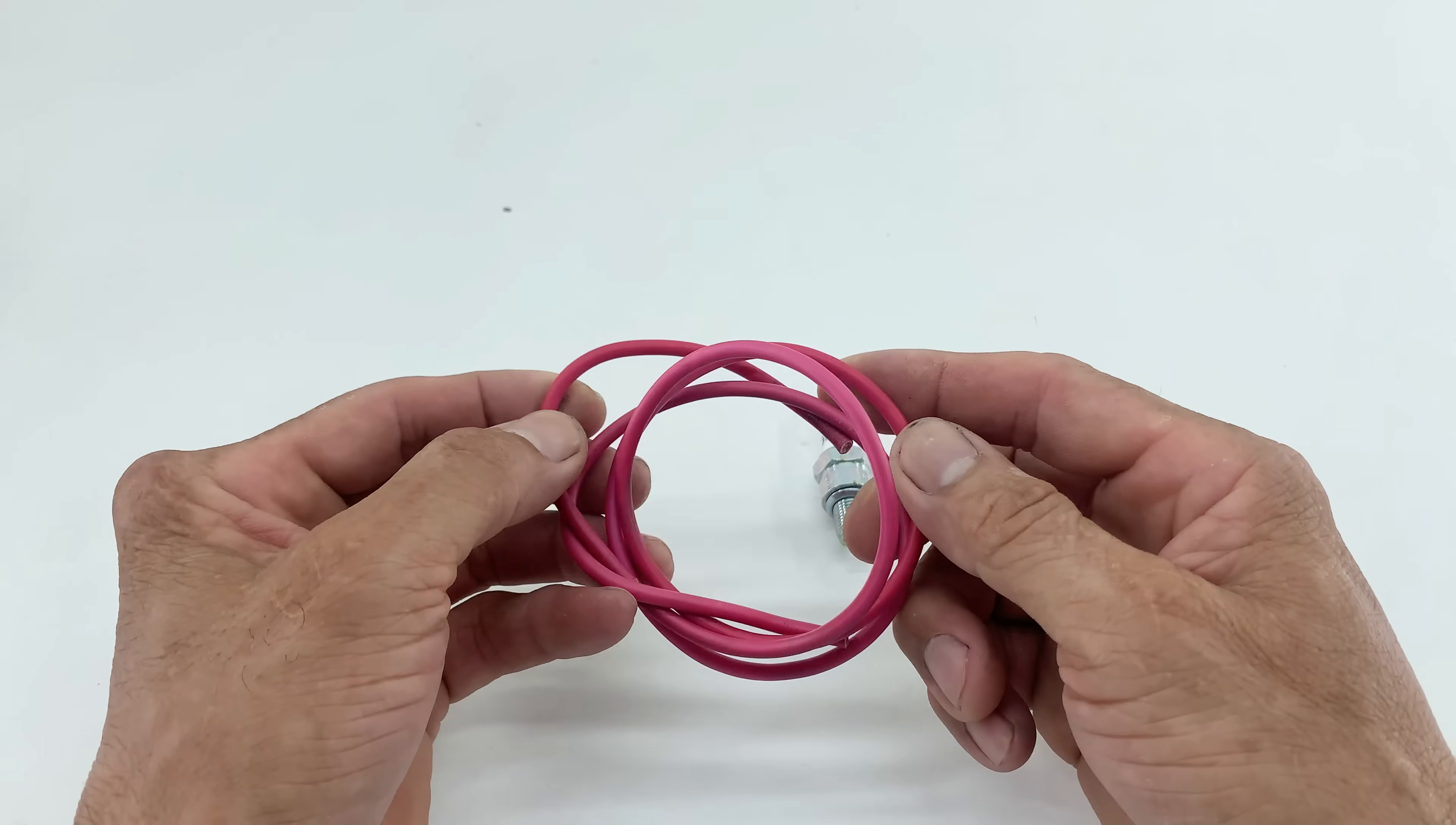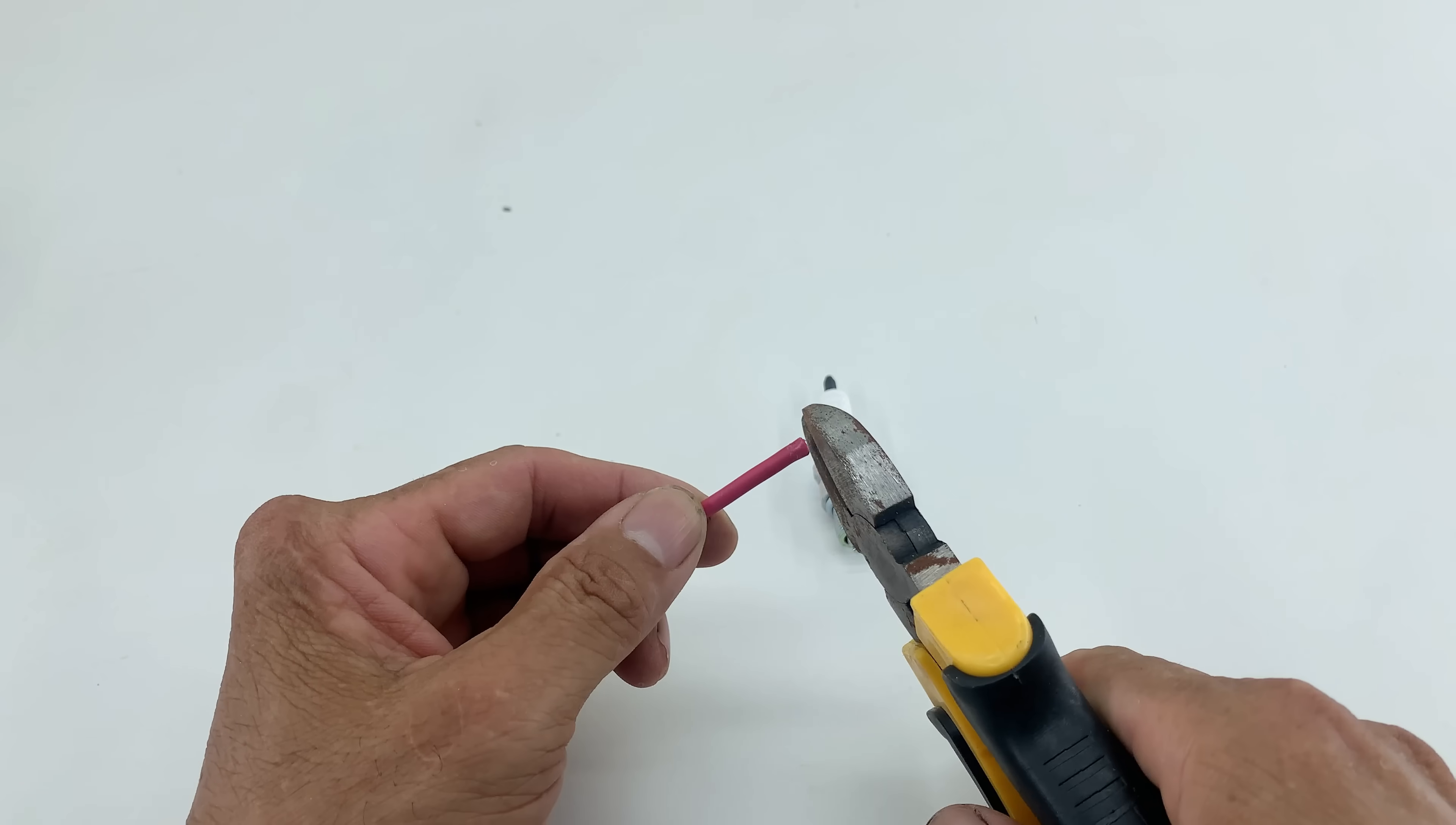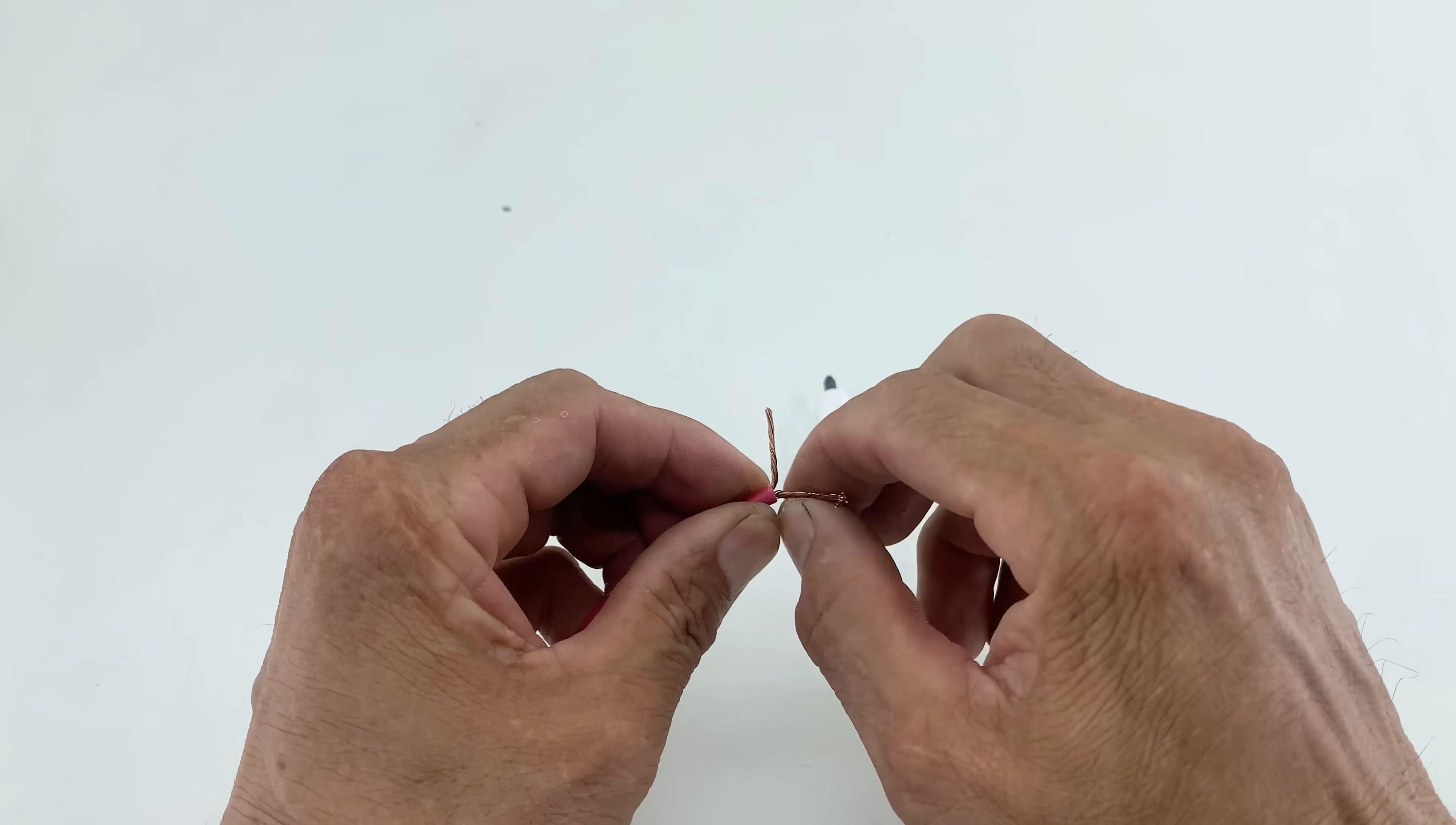Next, I take a section of red electrical wire. Using wire cutters, I meticulously strip a segment of the insulation from one end. After stripping the insulation, I split the copper wire core into two parts and then twisted them tightly.